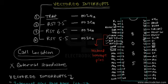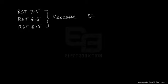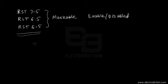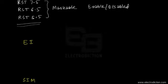On the other hand, the interrupt pins RST 7.5, 6.5, and 5.5 are also referred to as maskable interrupts — meaning they can be either enabled or disabled. In order to enable or disable these interrupts, we have two instructions: EI (Enable Interrupt), shown in the previous tutorial, and SIM.